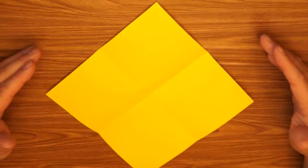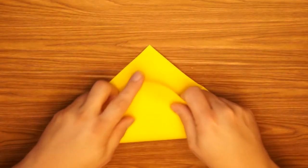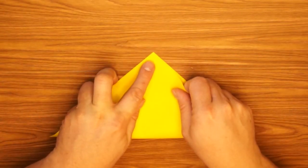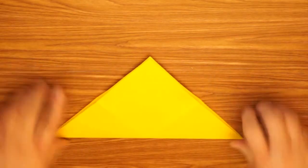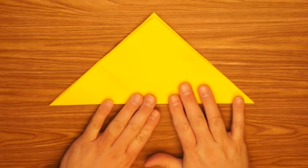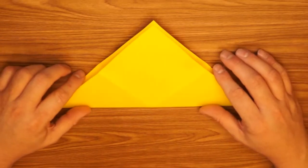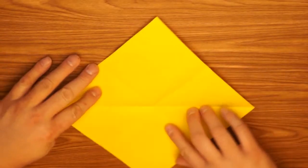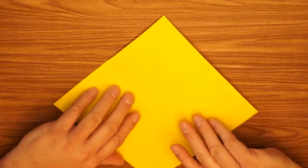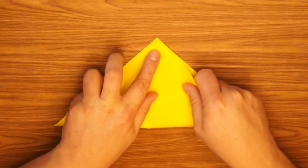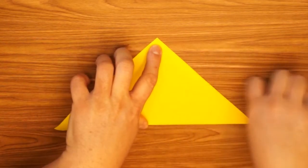Open that up. Turn it so that it's shaped like a diamond and fold the bottom to the top to make a triangle. Open up the triangle and turn it so the crease is vertical. Fold the bottom to the top again, making a triangle going the other direction.